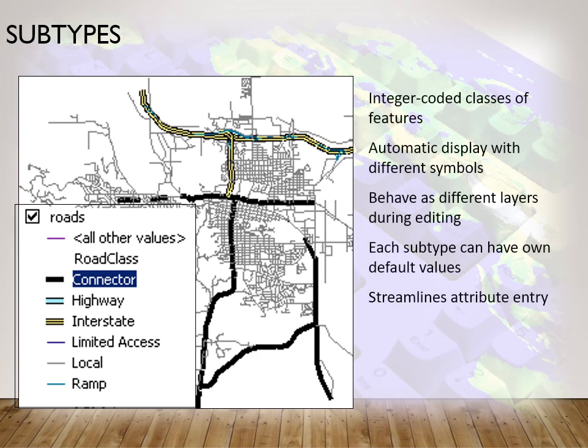Subtypes is a way to link symbology to your table. Symbology is the look, the cartography, the symbol you use for certain map entities. For example, with roads, you have different kinds — highways, interstates, ramps. When you digitize a highway, certain attribute data goes into the table; if you're digitizing a local road, different attribute information will pop up. This will be something you'll deal with more in GIS 33.